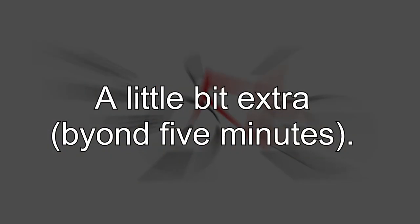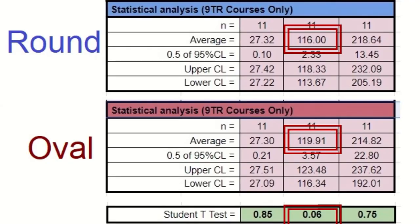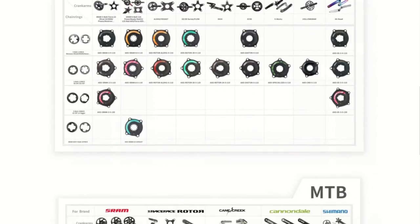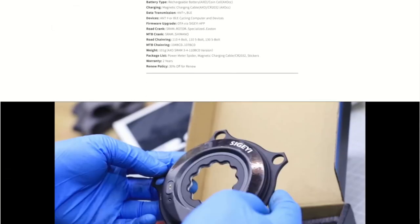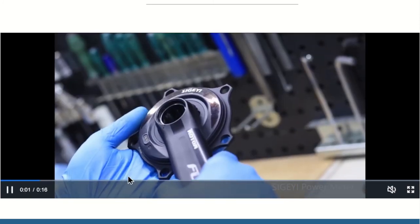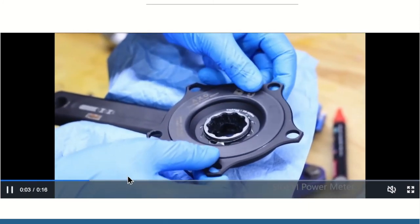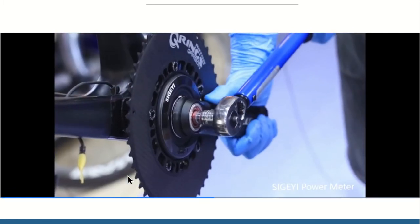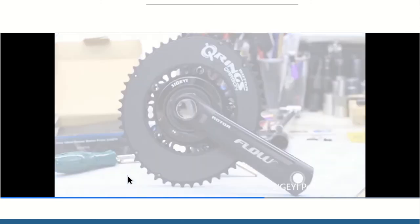But what about that heart rate data, where the differences were potentially significant? I included the heart rate data for another reason. If you use oval chainrings with some power meters, they overestimate the power by a few percent. So potentially I'm not comparing like with like. I don't know whether my power meter falls into this category, as the manufacturers don't specify this. However, on their website they do show the power meter being used with a Rotor oval chainring, which suggests it doesn't suffer from that issue.